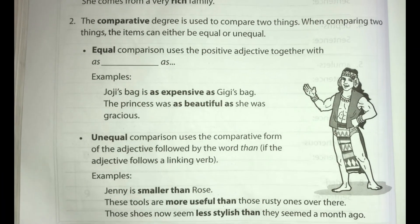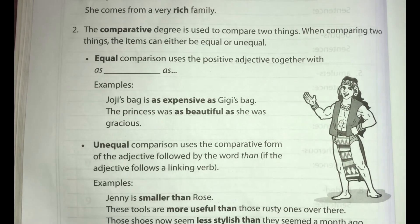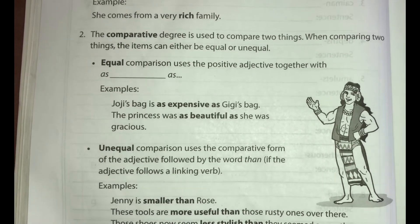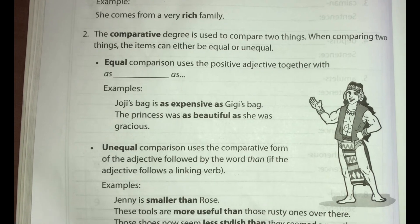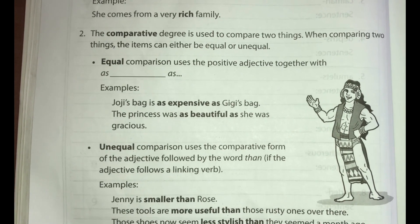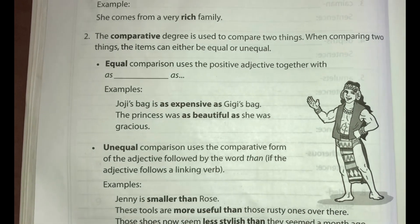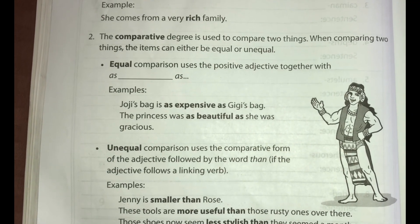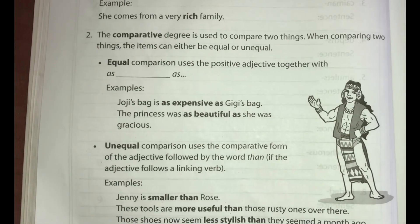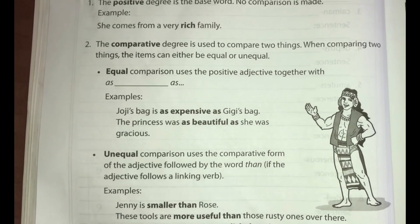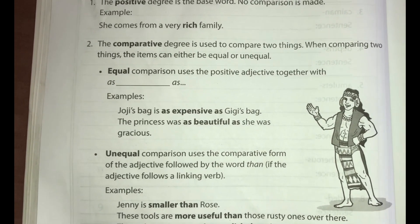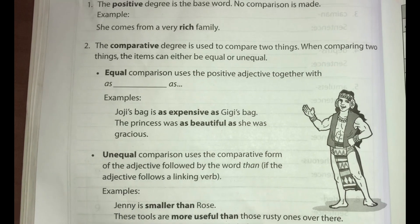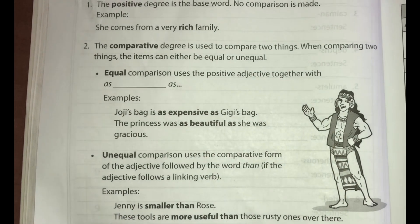Number two: the comparative degree is used to compare two things. When comparing two things, the items can either be equal or unequal. Equal comparison uses the positive adjective together with 'as...as.' Examples: Georgie's bag is as expensive as Gigi's bag. The princess was as beautiful as she was gracious.